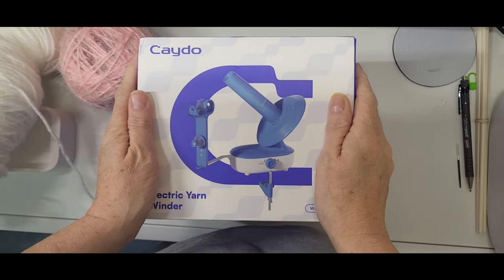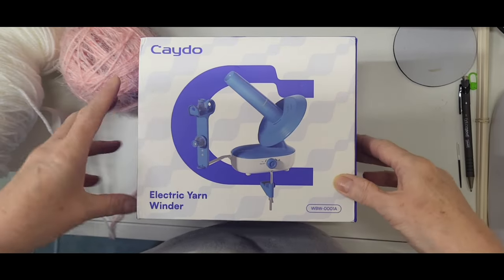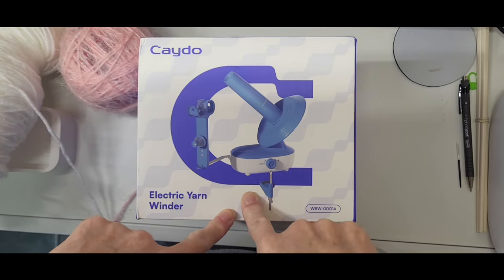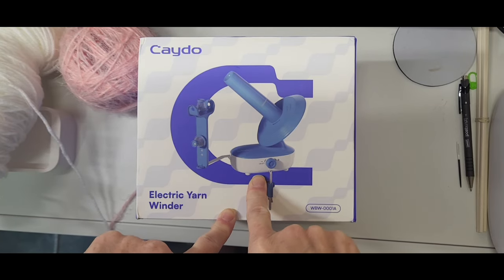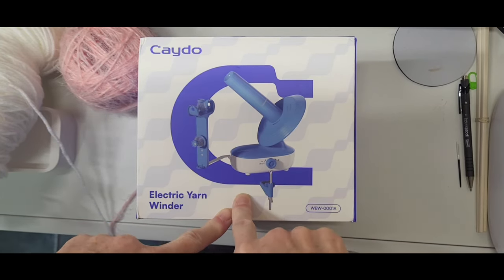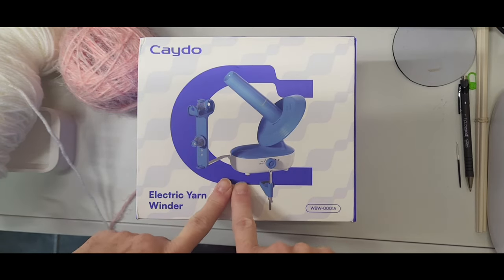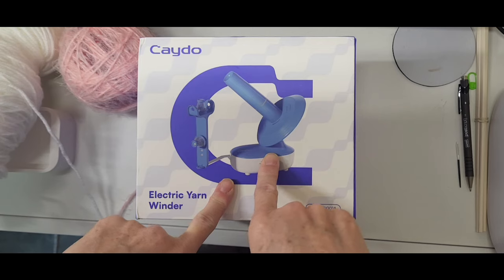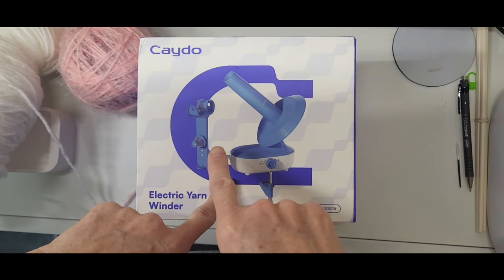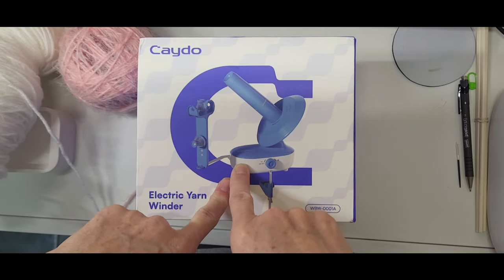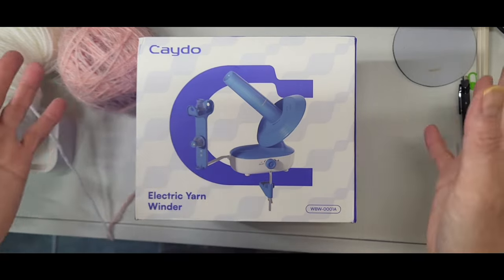Okay, so here we are with the Kato ball winder. It's an electric ball winder and apparently, unlike other ball winders, when there is an issue, if there's a knot or anything like that, it will stop. I'm really impressed with that. I can't wait to try it out, so let's unbox it.